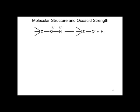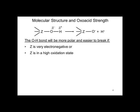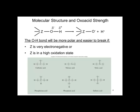Let's look at molecular structure and oxoacid strength. The OH bond will be more polar and easier to break if the Z atom is very electronegative or Z is in a high oxidation state. Here are some examples: carbonic acid, nitrous acid, nitric acid, etc.